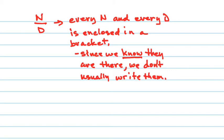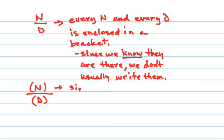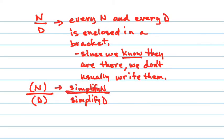But when they're not written, it sometimes causes students problems when thinking about order of operations. So in reality, every fraction has its numerator enclosed in brackets and its denominator enclosed in brackets. And according to order of operations, what does a bracket tell you? You need to do that first. So we always need to simplify the numerator and then simplify the denominator before you deal with that fraction bar. And the fraction bar indicates division.